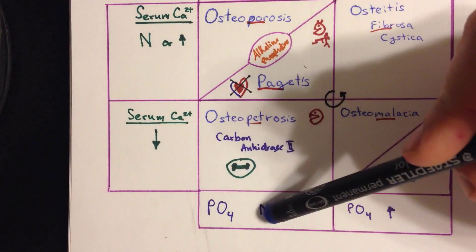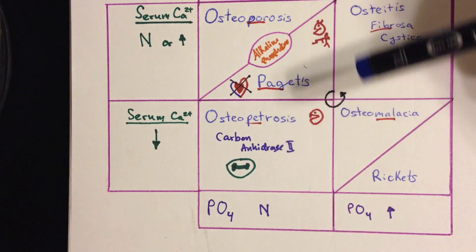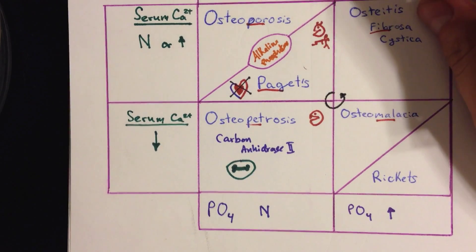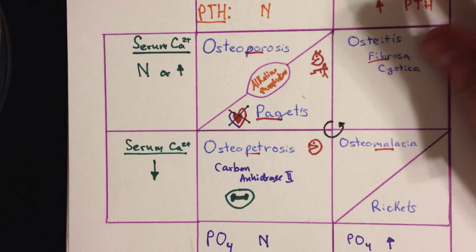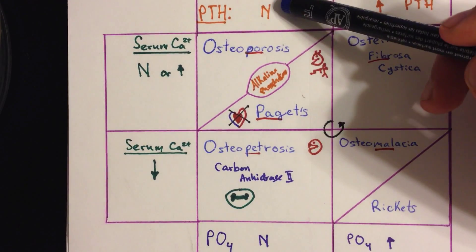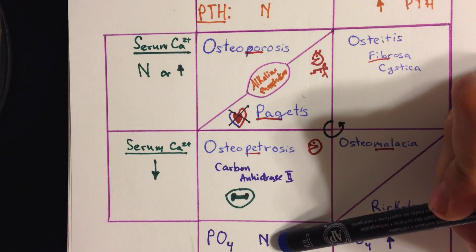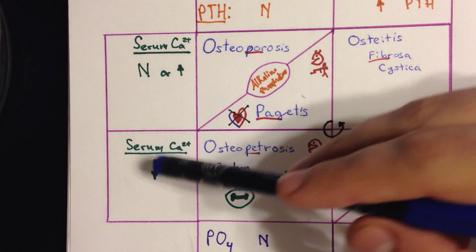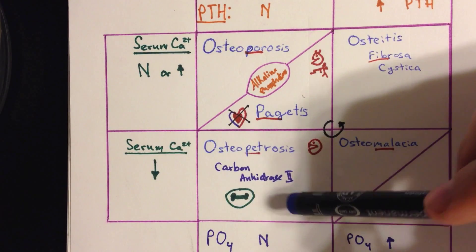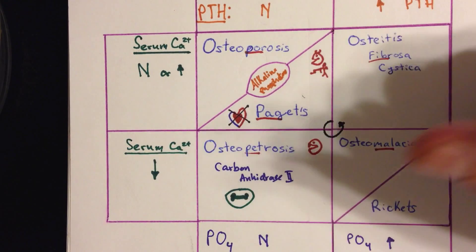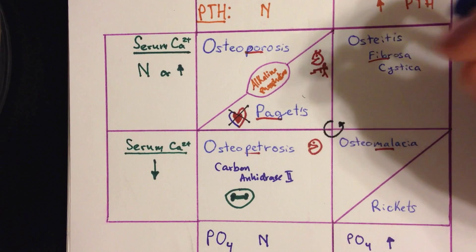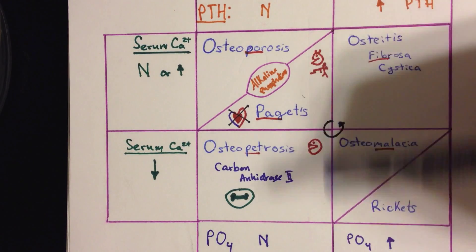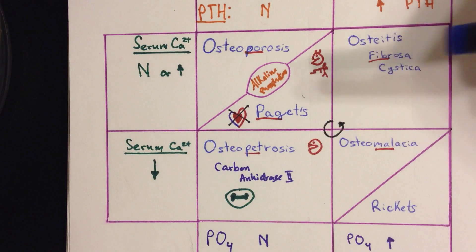In terms of lab values for osteopetrosis, you have normal PTH and normal PO4, but you have decreased serum calcium. It's one of the diagnoses to keep in mind, especially if all the other lab values are normal.